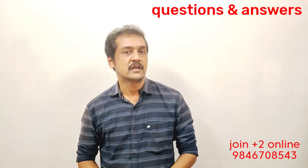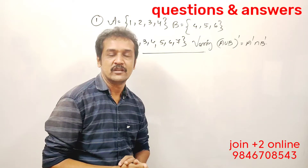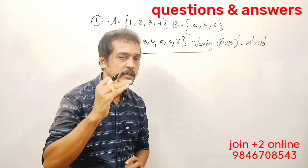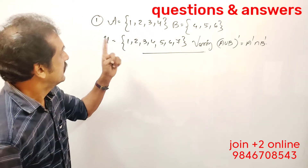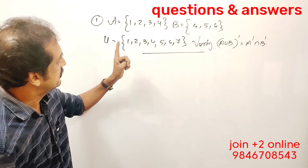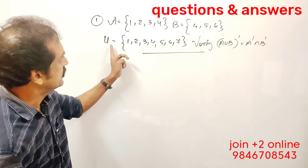Now let's start with the questions. First question: A is the set {1, 2, 3, 4}, B is the set {4, 5, 6}, and U is the universal set {1, 2, 3, 4, 5, 6, 7}. We need to verify A union B whole complement.